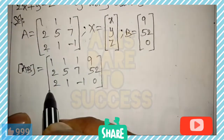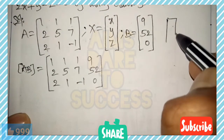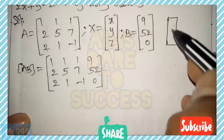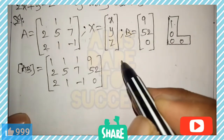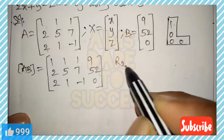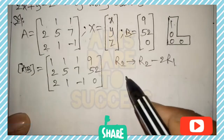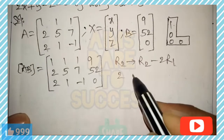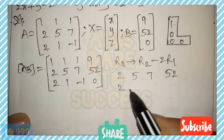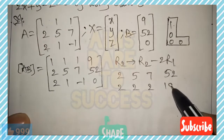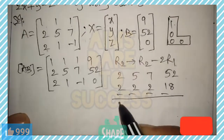Remember the logic for Gauss-Jordan method — it becomes very easy with it. We aim to get the L-symbol with 1, 0, 0 pattern. The first element of R1 is already 1, so keep it the same. For R2: since R2's first element is 2 and R1's is 1, we apply R2 → R2 - 2R1.